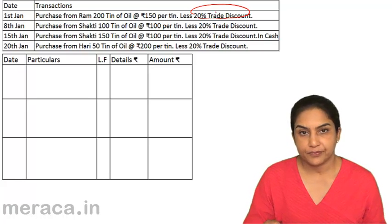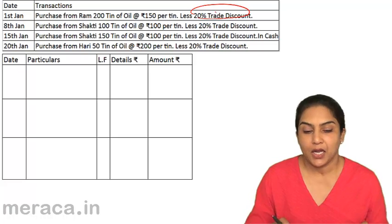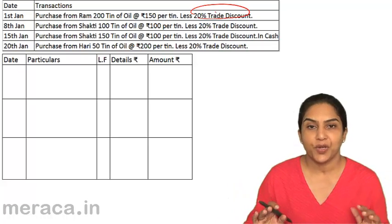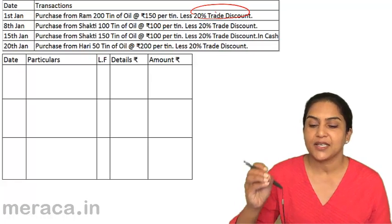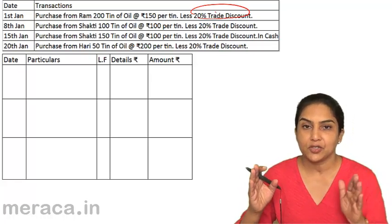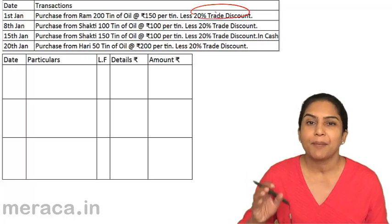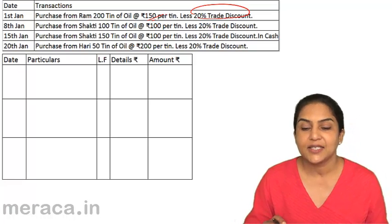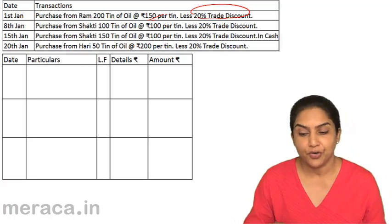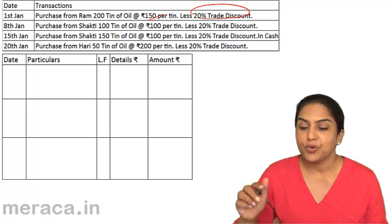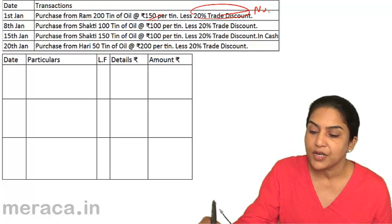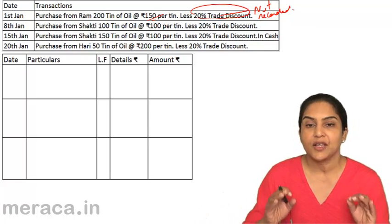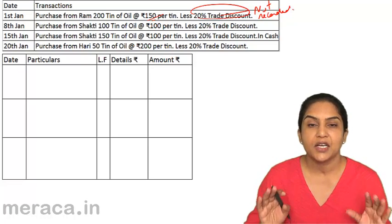What is this trade discount? When we buy from a supplier, it is possible that the supplier, for the bulk that we are buying, offers us a trade discount. The price being quoted is 150 — that is the catalog price, the price quoted initially — but he gives us a 20% discount. So basically, we buy this good for 150 less 20%, that is for 120 rupees. We do not record this trade discount in our books because it is not a discount received; the initial transaction we are entering into is at 150 less 20%.